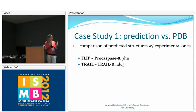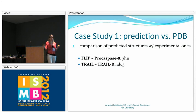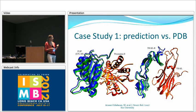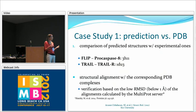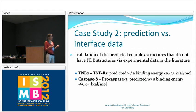I want to introduce three case studies. In the first one, we compared our predicted structures with experimental structures using the PDB. This was possible for only two cases, where our targets were the complementary chains of PDB IDs, allowing us to structurally align them with real PDB structures. The blue-red complex is the PDB complex, and the green-orange complex is the predicted complex. They fit well, and when we calculate the RMSD values, they are below 1 angstrom — indicating a good fit.